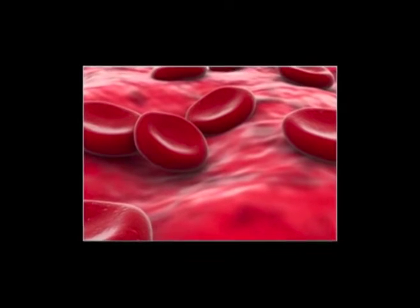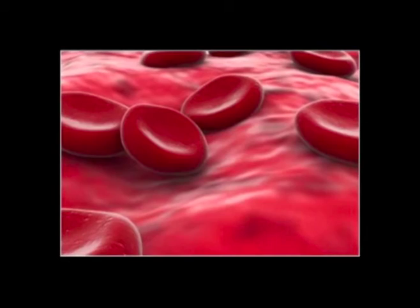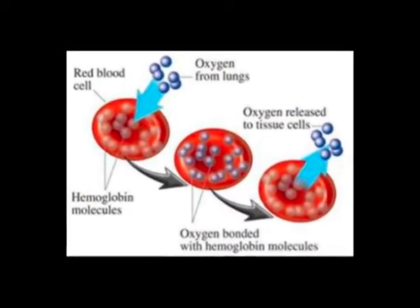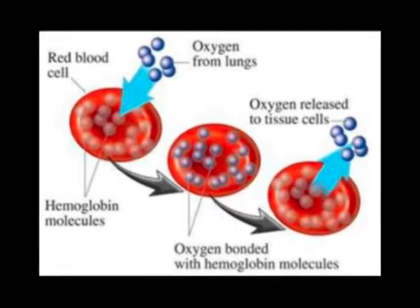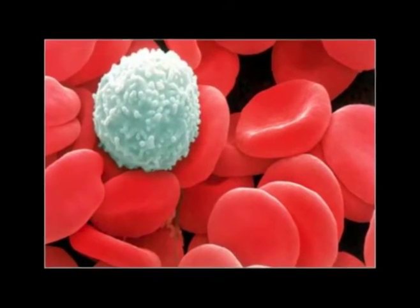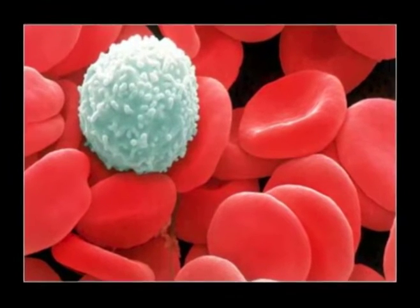All humans produce these blood components; there are no population or racial differences in the blood components. Red cells, or erythrocytes, are relatively large microscopic cells without nuclei. These cells normally make up 40 to 50 percent of the total blood volume. They transport oxygen from the lungs to all the living tissue of the body and carry away carbon dioxide. Red cells remain viable for only about 120 days before they are removed from the blood and their components recycled in the spleen.